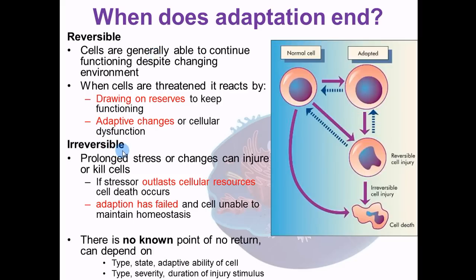Irreversible is when the cell crosses that line in the sand. The cell has eaten every piece of tissue inside it that it can to sustain life, and now it's time to die. The cell will either shrivel up and die or go through apoptosis — basically cell suicide — which we'll discuss in the next video. We don't know what the point of no return is, but you don't want to cross it. If you're a smoker, stop now. If you're drinking excessive alcohol regularly, back off — at what point will your liver cells not be able to fix themselves and become a sclerotic liver?